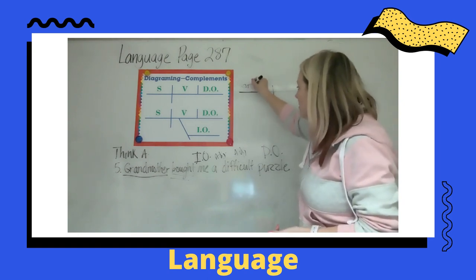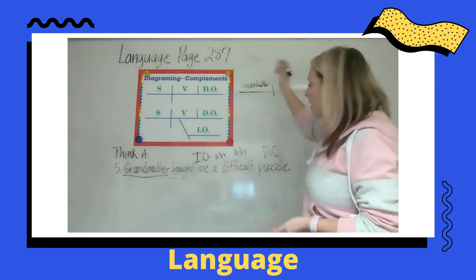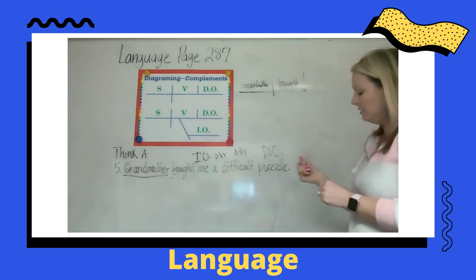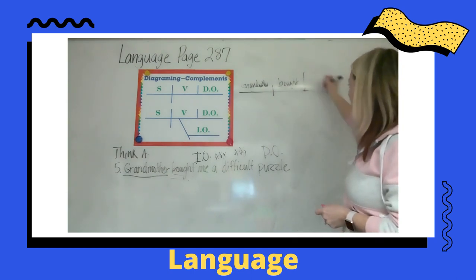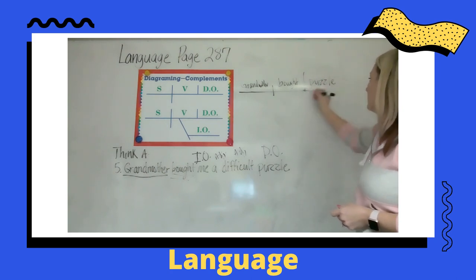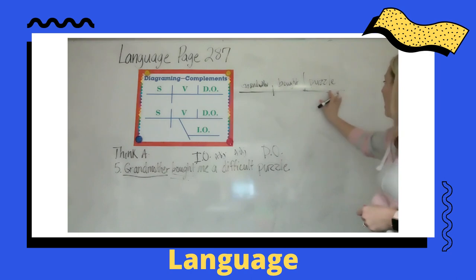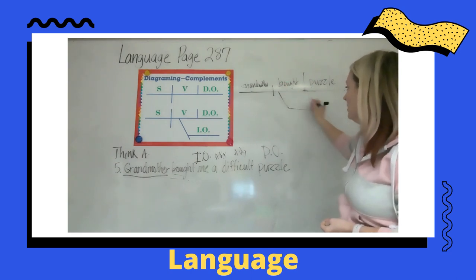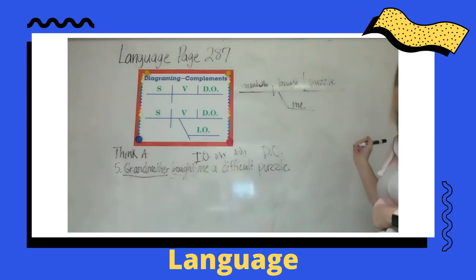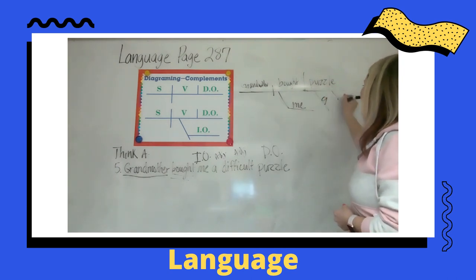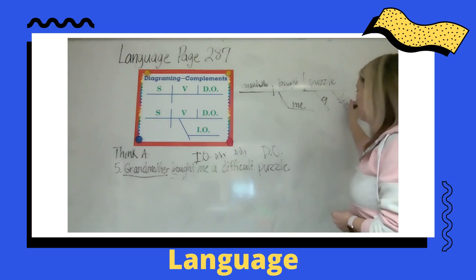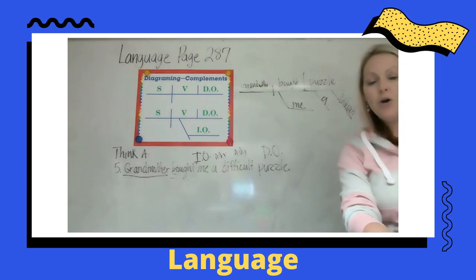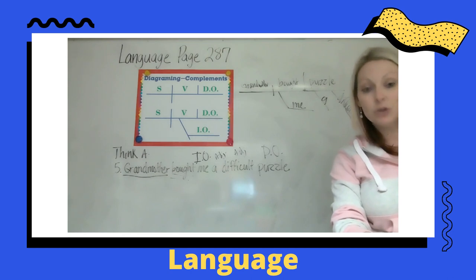Diagramming this: we have grandmother on the left, bought on the right, and our direct object puzzle. Then we have the indirect object coming off of bought, which is me. Which kind of puzzle? A difficult kind — so 'difficult' and 'a' are our adjectives coming off puzzle. That is number five.